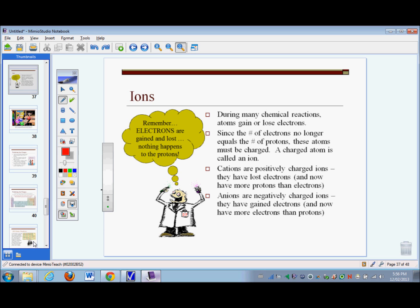What is an ion? An ion is a charged atom. It's an atom that has gained or lost electrons, so it's no longer neutral.